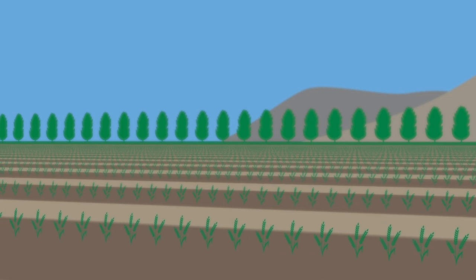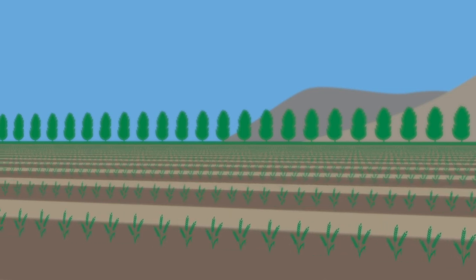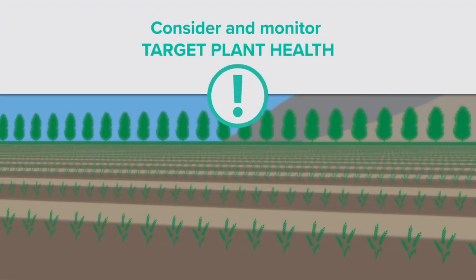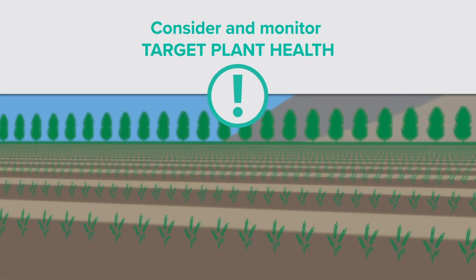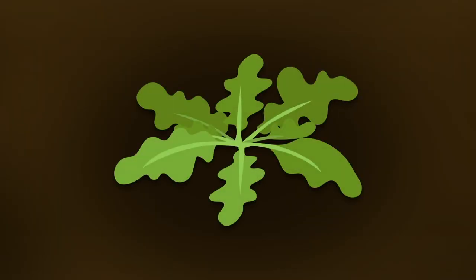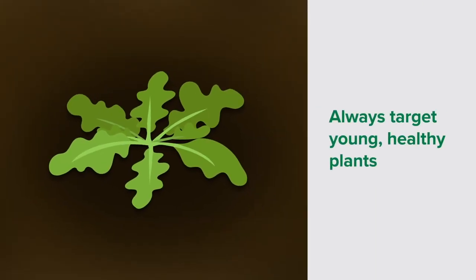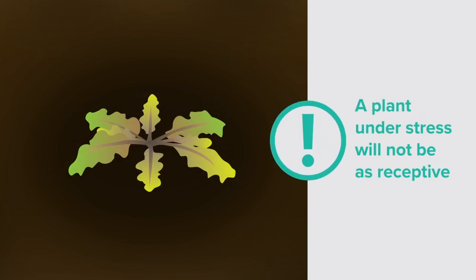To maximise product efficacy, you should also consider and monitor the health of the plant you're targeting. For weeds, target young, healthy and actively growing plants as they will be most receptive to the product. A plant under stress will not be as receptive and this can significantly reduce product efficacy.